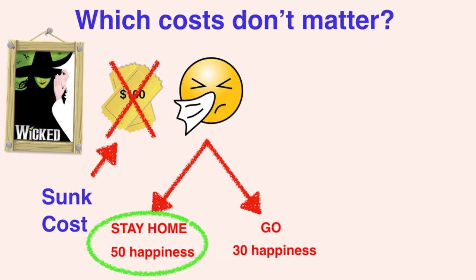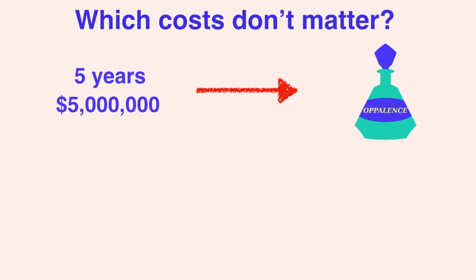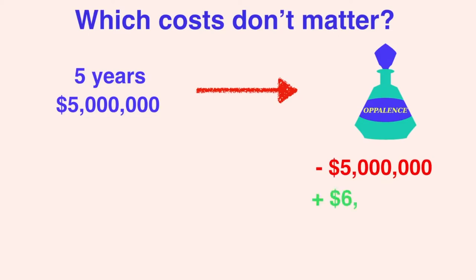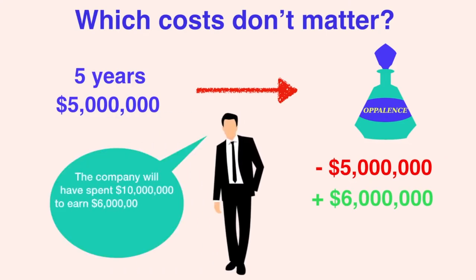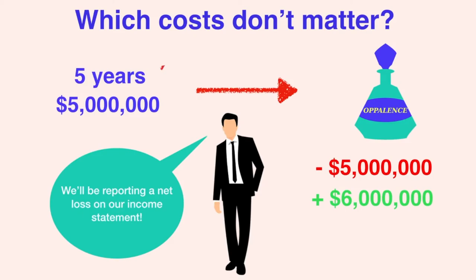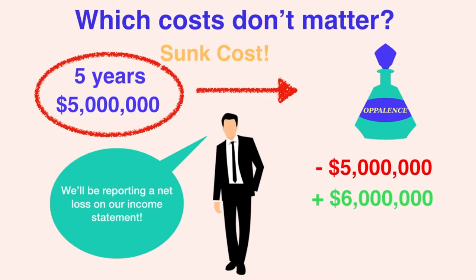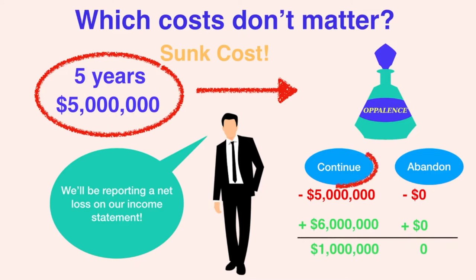In this way, sunk costs can push people to move forward with unprofitable projects. But sunk costs can also cause people to abandon otherwise profitable projects. Let's say a company spends five years and over $5 million developing a perfume called Opulence. Just before the launch, they learn the perfume actually repels men. It'll cost another $5 million to alter the chemical formula, but the company expects to earn a profit of $6 million from selling the perfume. The CEO decides not to alter the formula since the company will have spent $10 million to earn $6 million. But look at the numbers — regardless of whether we move forward or not, we've already spent $5 million. That is a sunk cost. So we're actually comparing spending $5 million and earning $6 million versus spending $0 and earning $0. Moving forward with the project is the better option.